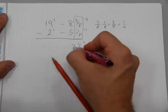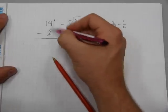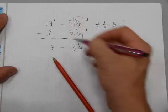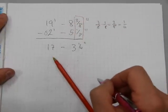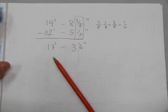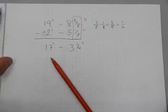8 minus 5 is 3. 9 take away 2 is 7. And 1 minus nothing is 1. The answer is 17 feet 3 inches and a quarter inch. So far so good.